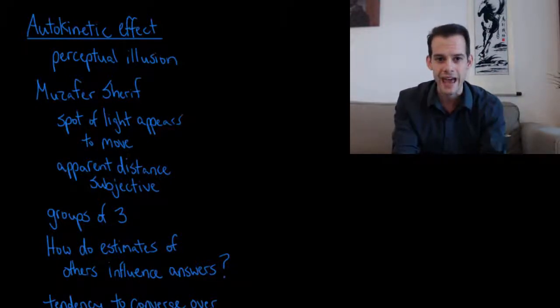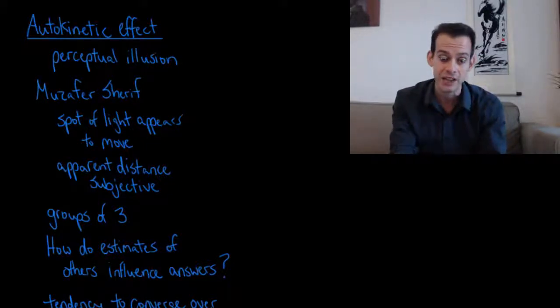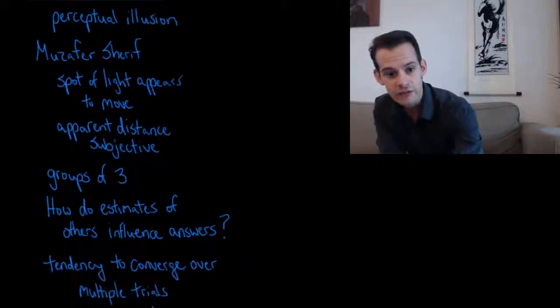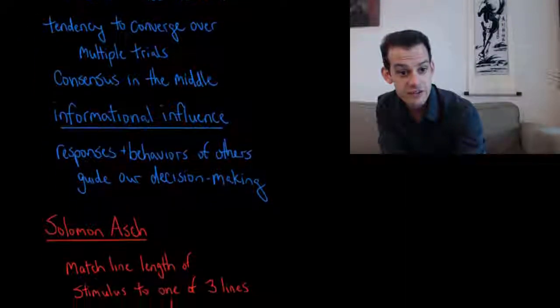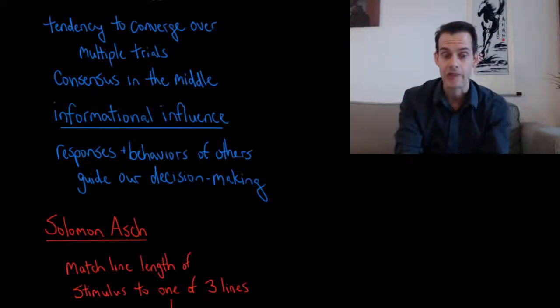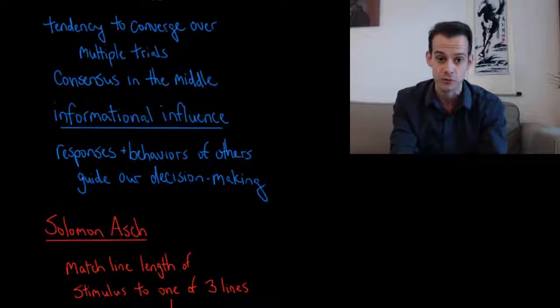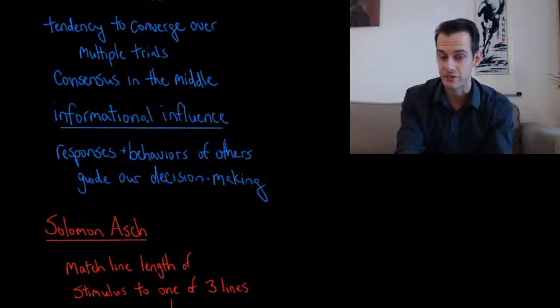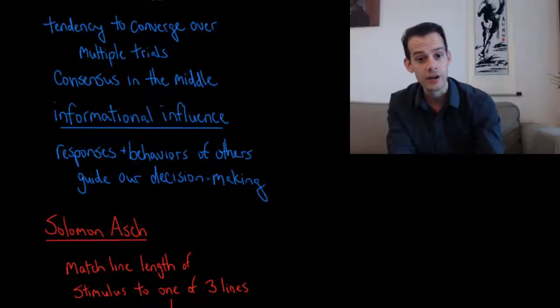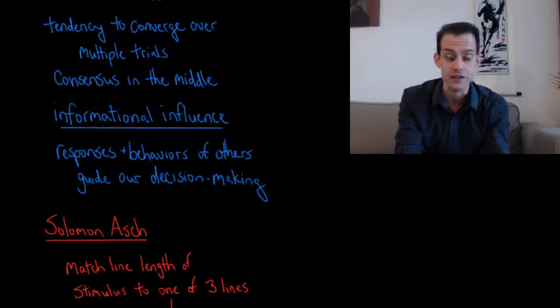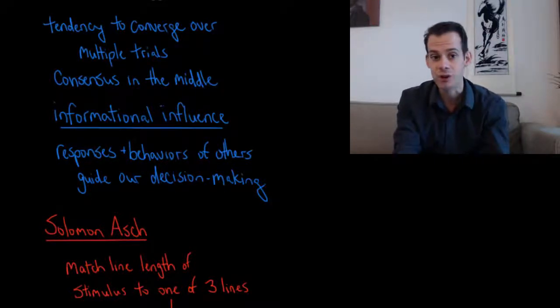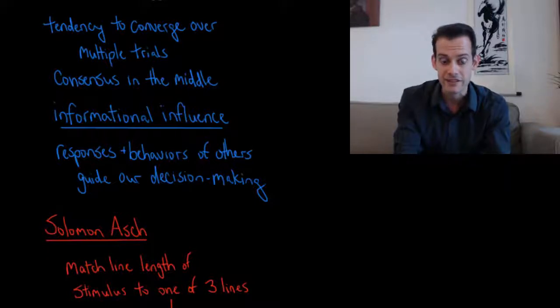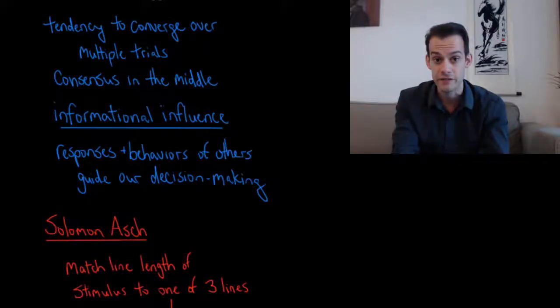And so what Sherif did was he put participants into groups of three. And he wanted to see, do the estimates of other people influence your answers? So if you hear how much other people think the light is moving, do you change your answers over time? And what Sherif found was that participants showed a tendency to change their answers. And the group estimates would converge over the course of multiple trials. In other words, some people who initially gave very low estimates would increase their estimates. And some people who thought it was moving a foot would gradually reduce their estimates until the group reached a consensus in the middle. Even though of course the spot of light was not actually moving at all.